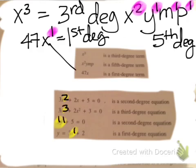Then we look at xy, it has a one and a one. So we take that one and the one and we add it and we get two. So it's a second degree equation. And then the last one, 3x plus two is a first degree equation.